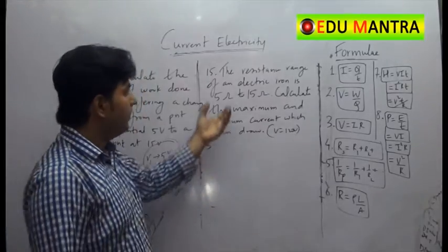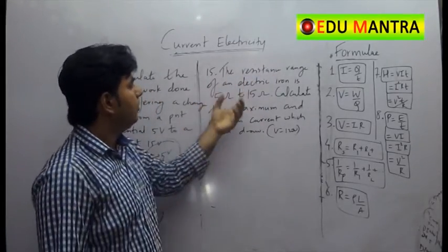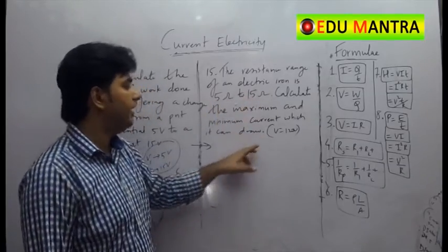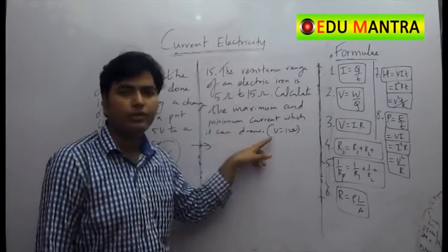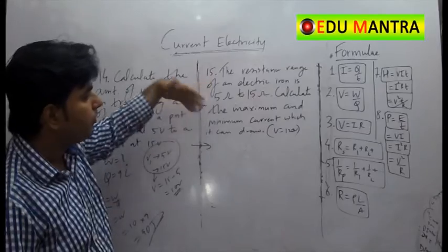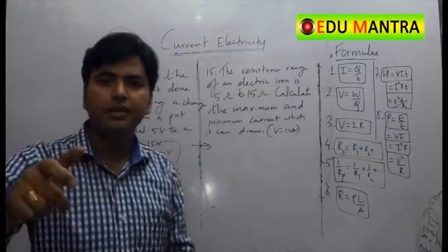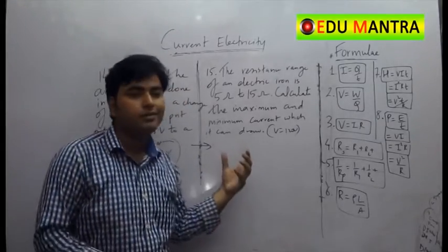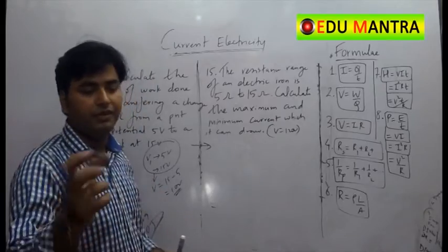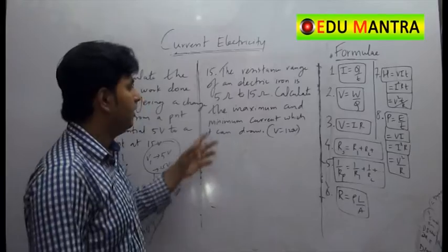In the second case, we have the resistance range of an electric iron coil, 5 ohm to 15 ohm. Calculate the maximum and minimum current which can be drawn. Voltage is 120 volt supply. So here, we know that the electric iron has a button by which, by rotating, we can change the value of current in that. So the amount of heat can be changed by that.